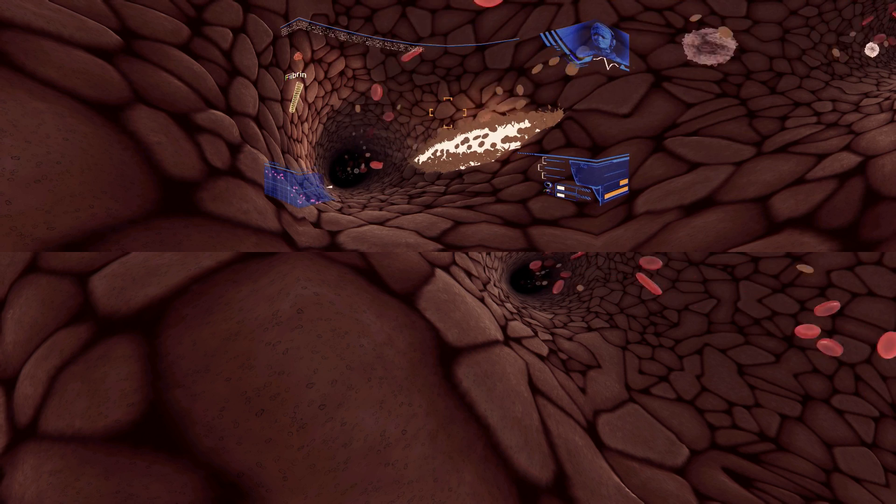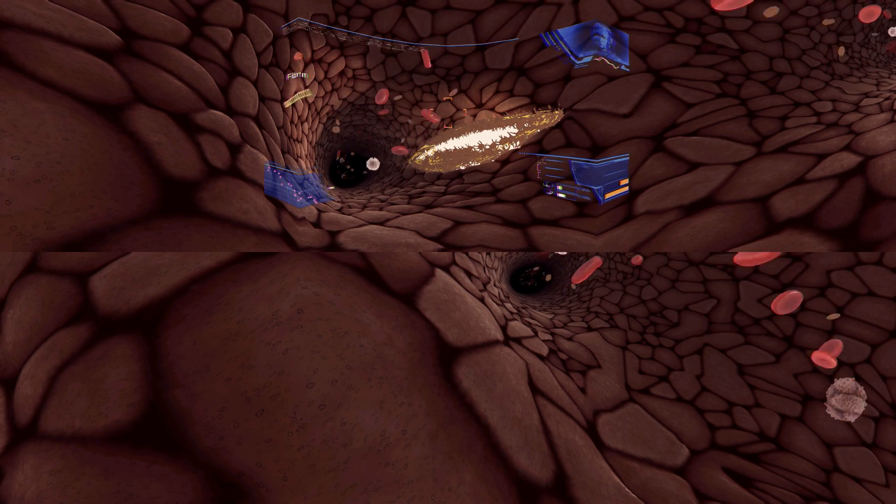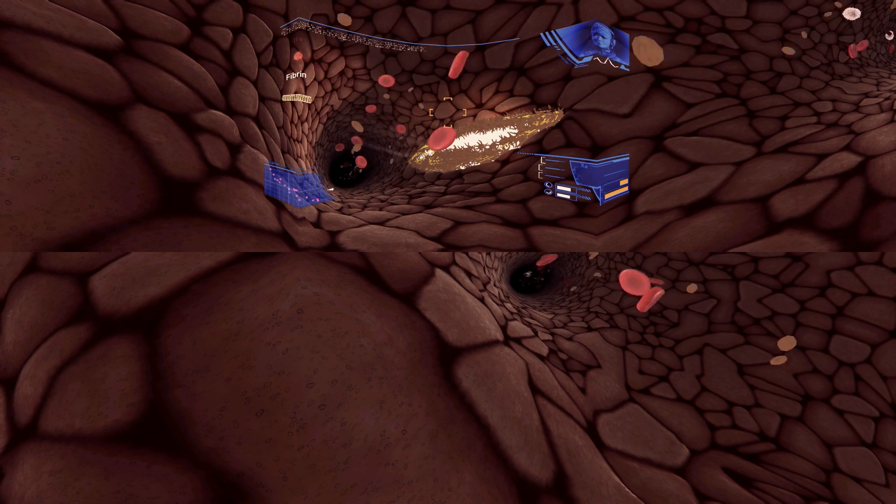The thrombin has changed the fibrinogen into fibrin strands, Sergeant. These strands link together around the platelets to form a clot. We're almost done.